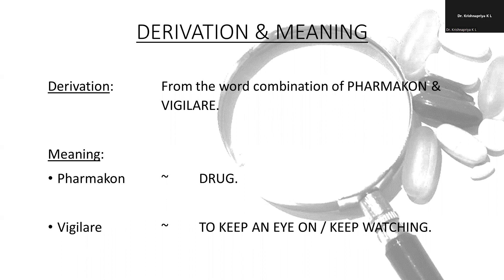Derivation and meaning. Pharmacovigilance is derived from a combination of the words 'pharmacon' and 'vigilare.' Pharmacon means drug. Vigilare means to keep watch.